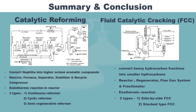In conclusion, both catalytic reforming and fluid catalytic cracking are used in refinery plants. The function of catalytic reforming is to convert naphtha into higher octane aromatic compounds. Its five process units are the reactor, furnace, separator, stabilizer, and recycle compressor. It undergoes an endothermic reaction in the reactor, and there are three types of configurations: continuous reformer, cyclic reformer, and semi-regenerative reformer. The function of fluid catalytic cracking is to convert heavy hydrocarbons into smaller hydrocarbons. Its four process units are the reactor, regenerator, flue gas system, and fractionator. It undergoes an exothermic reaction, and there are two types of configurations: side-by-side FCC and stack-type FCC.